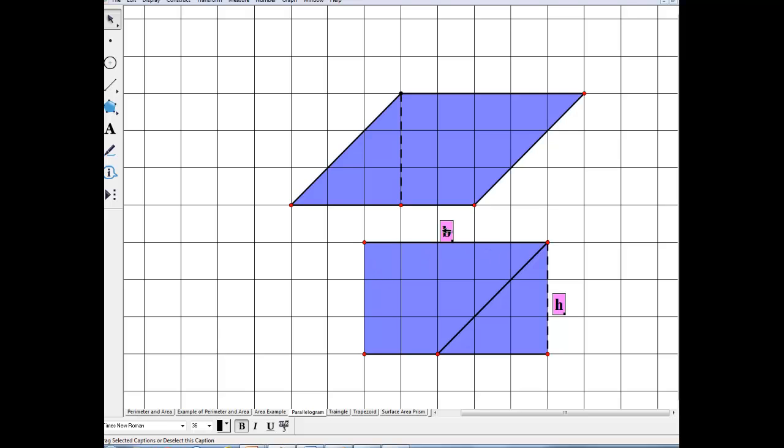So area of a rectangle is that length times that length. So that's b times h. So area of a parallelogram is the base times height.